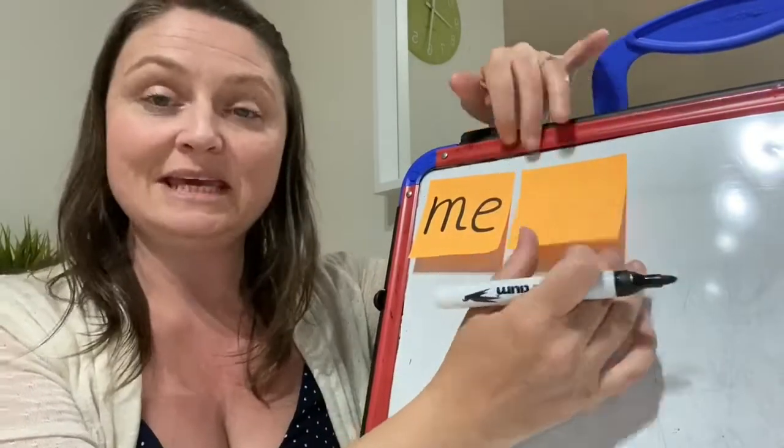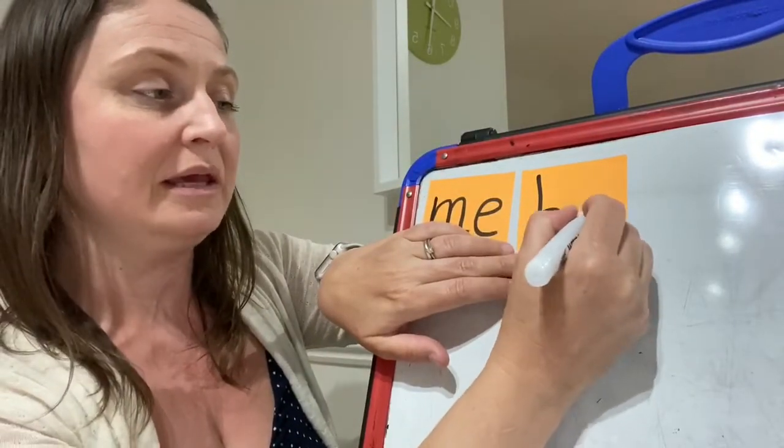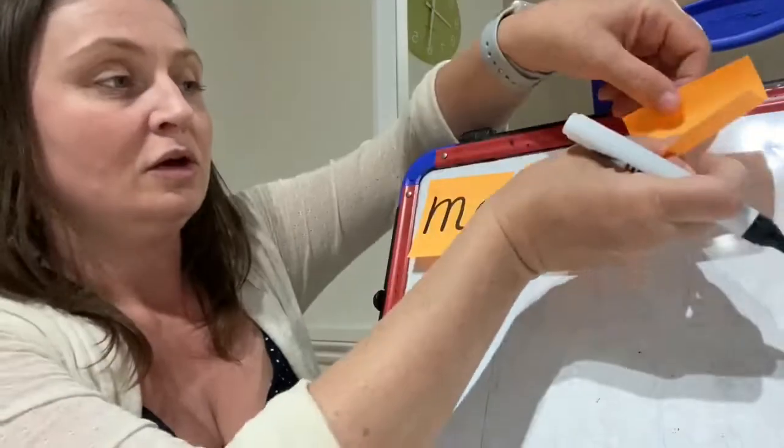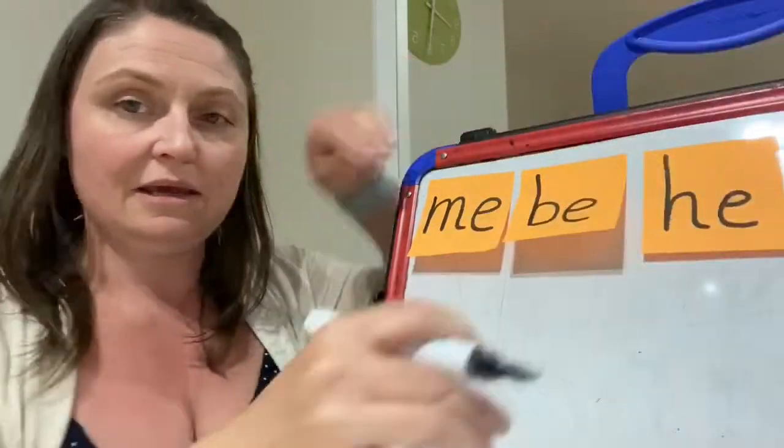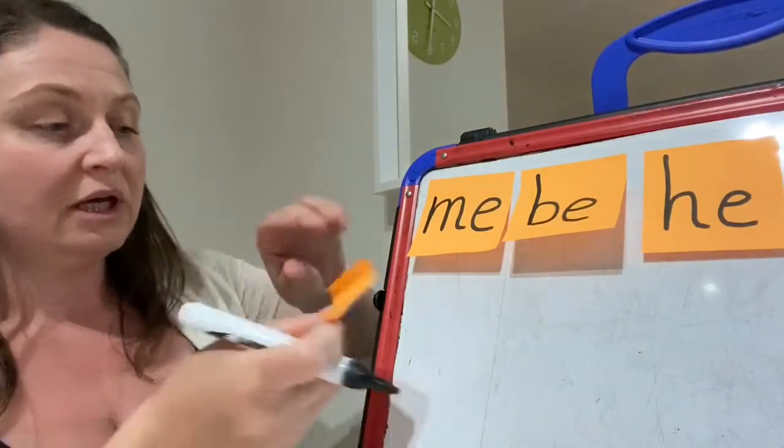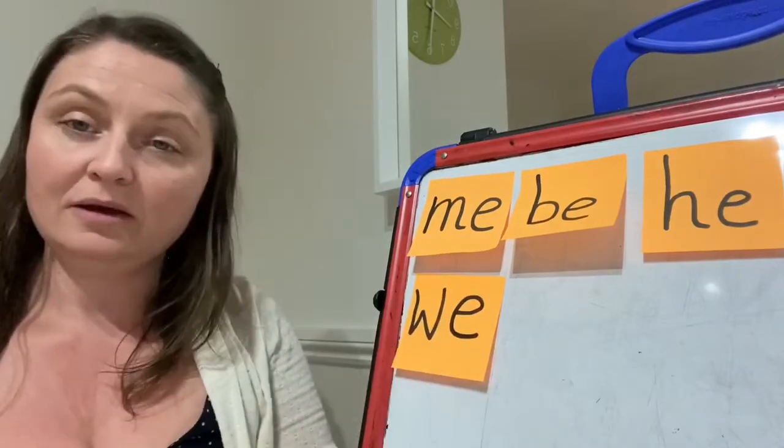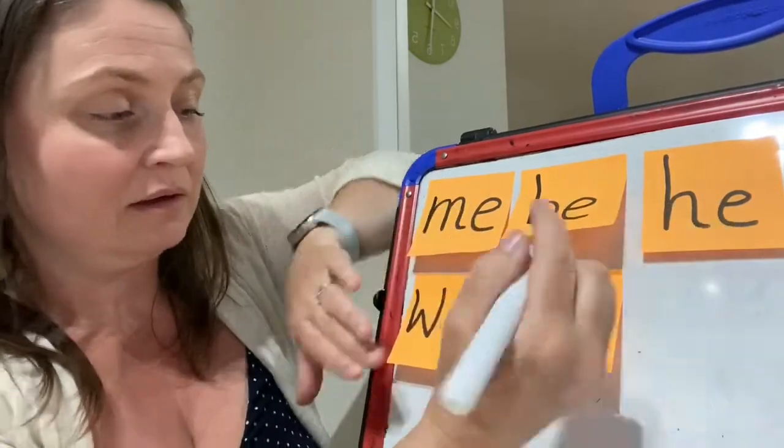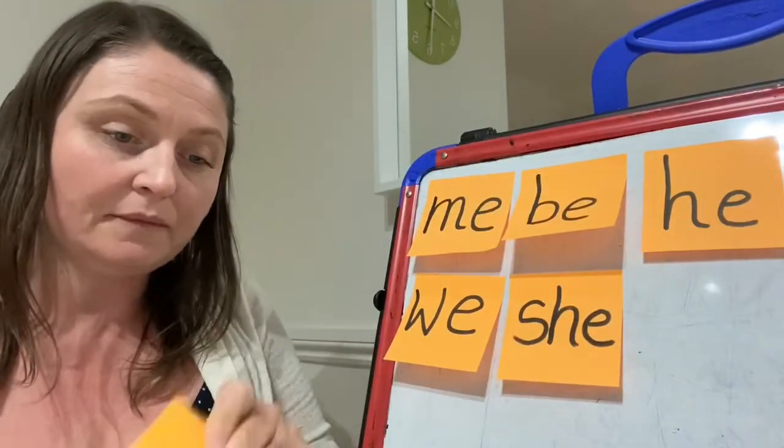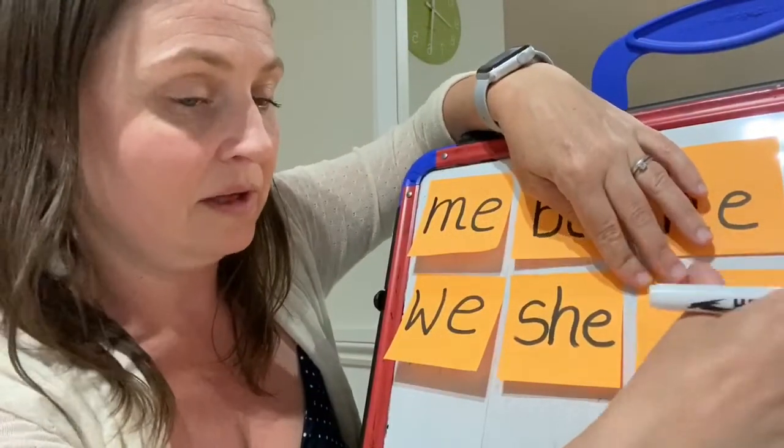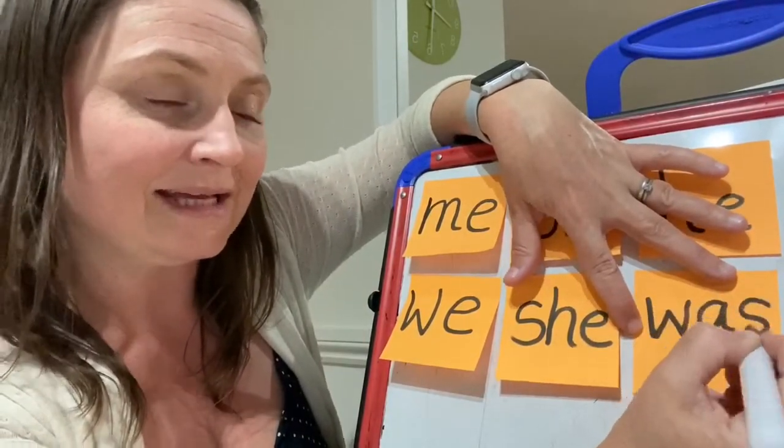Tricky word be is the next one. Remember, it's our tall ascending letter. Be. Tricky word he. Another ascending letter, h and an e. Tricky word we. W, e. Tricky word she. S, h, e, she. Tricky word was. W, a, s, was.